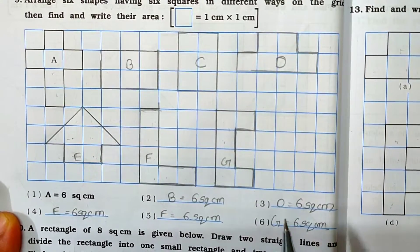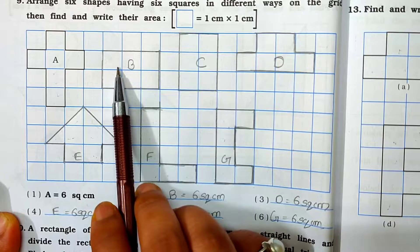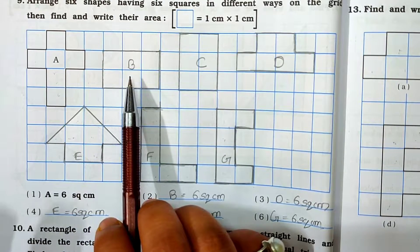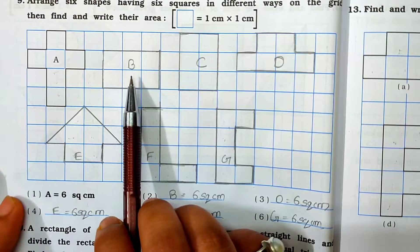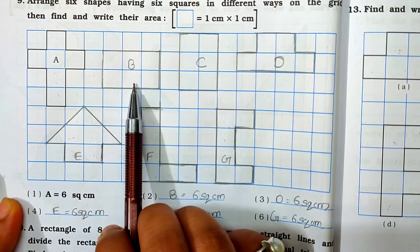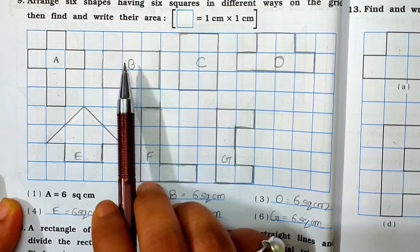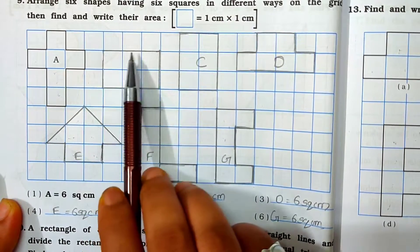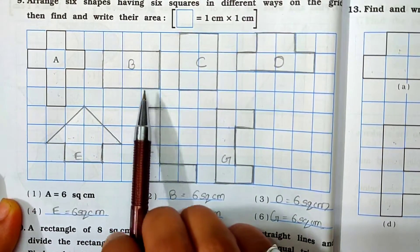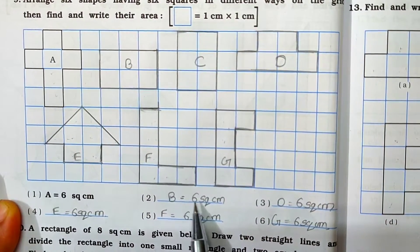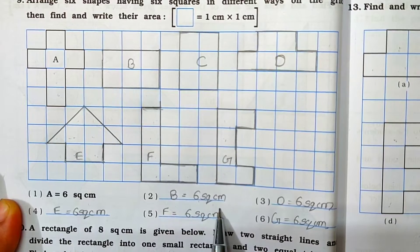Now see the next one B. So how you have to arrange it? You have to take 6 squares. 6 squares you have to draw. You have to find out your area. So 1, 2, 3, 4, 5 and 6. This also 6 square cm. Give the name B and write down here: B is equal to 6 square cm.